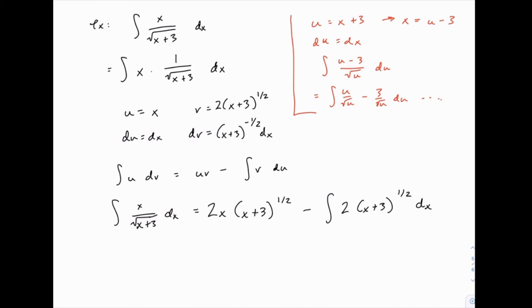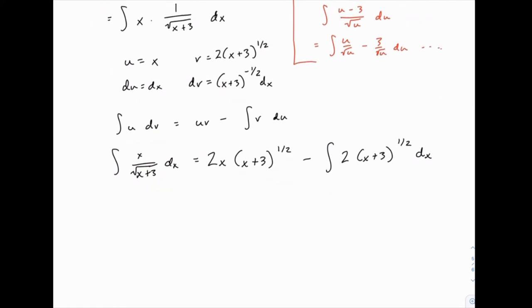And again, I will skip over some of the details, but if you need to pause and do that on your own, writing down all the steps, certainly feel free to do so. So this is going to carry along the two. And then x plus 3 to the 1 half is going to give us x plus 3 to the 3 halves, when we integrate, divided by 3 halves, which is the same as multiplied by 2 thirds.